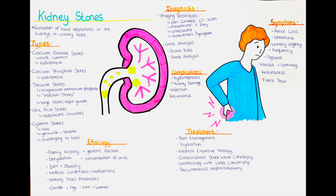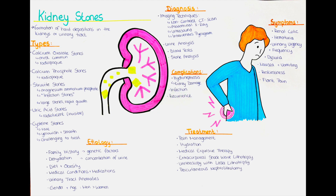They are typically radio-opaque, so visible on X-ray, and it can be challenging to treat them. What are the causes of kidney stones? The cause of renal stone formation is often multifactorial, involving a combination of genetic and environmental factors. Having a family history of kidney stones increases the risk of developing them. Genetic factors can play a role in stone formation. Inadequate fluid intake and dehydration can concentrate the urine, making it easier for minerals and substances to crystallize and form stones.